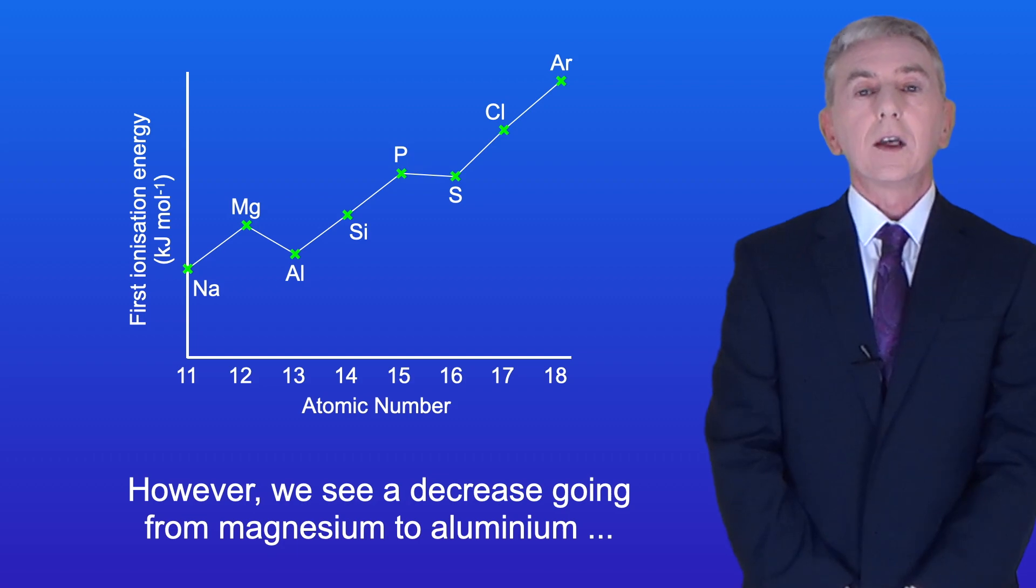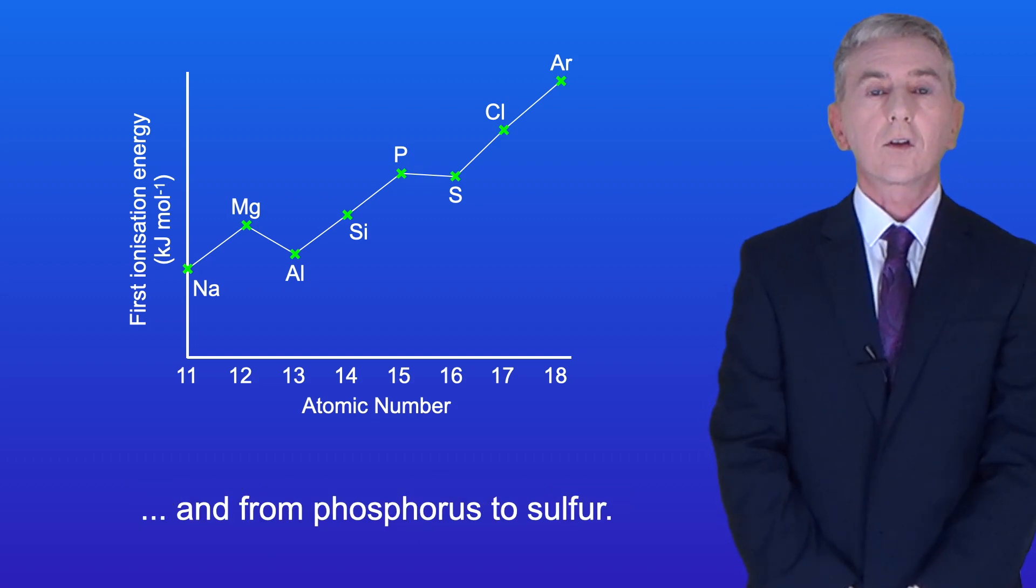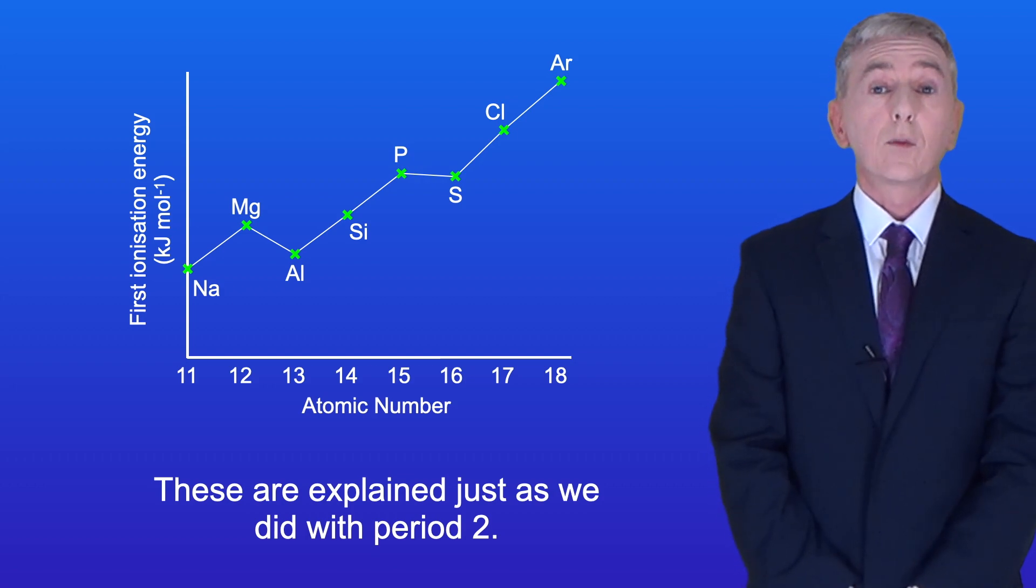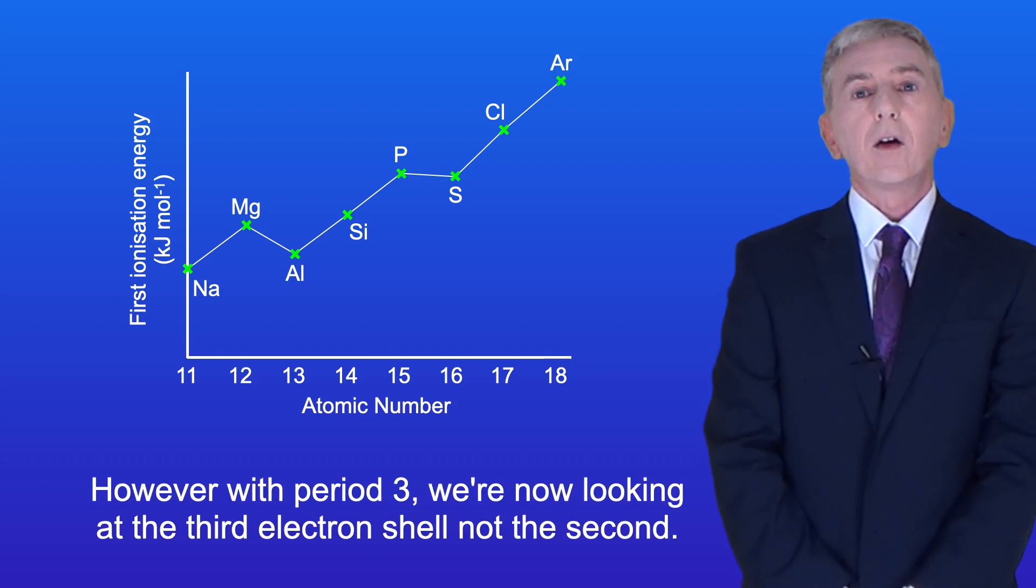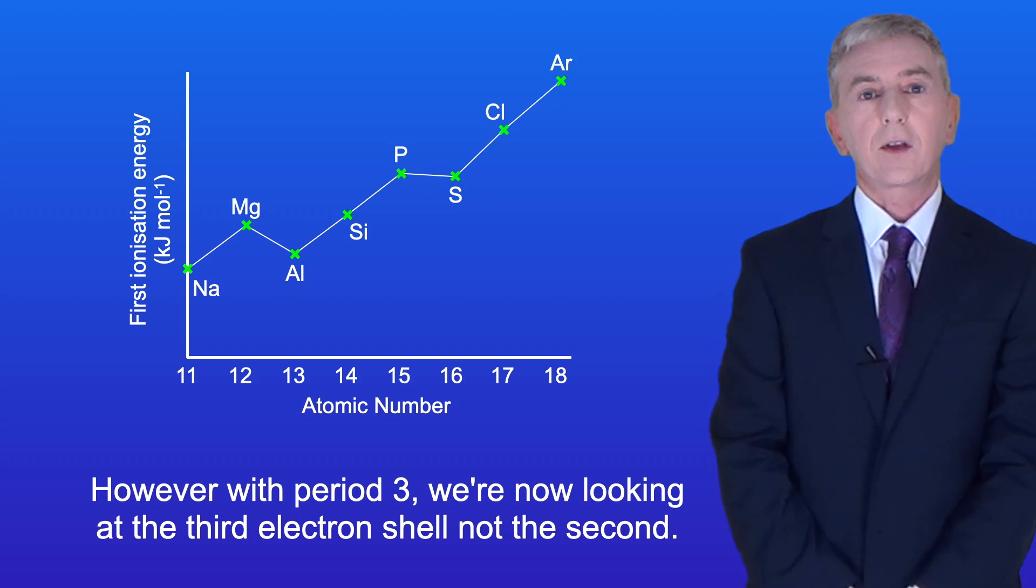However we see a decrease going from magnesium to aluminium and from phosphorus to sulfur. These are explained just as we did with period 2. However with period 3 we're now looking at the third electron shell not the second.